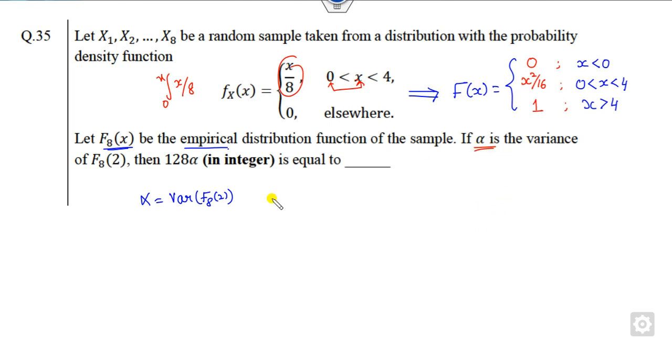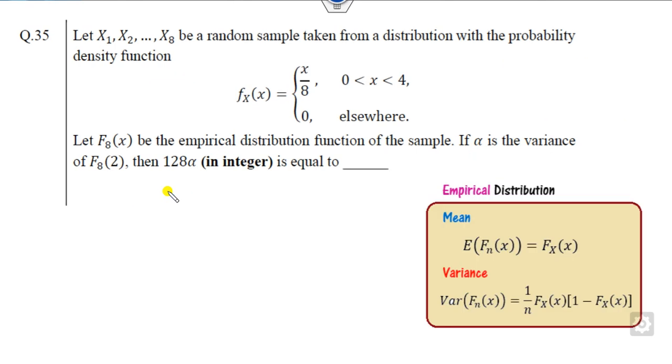Now alpha is my variance. So what is the shortcut trick for you? This you should remember: this is empirical distribution, this is the formula for this.